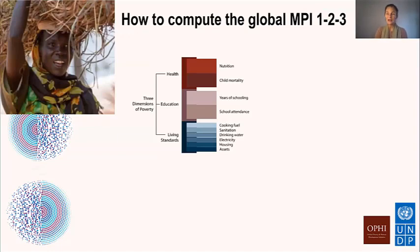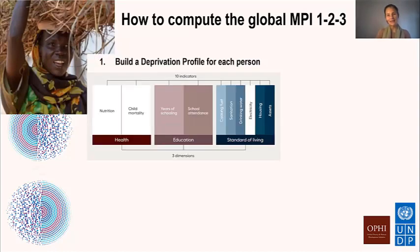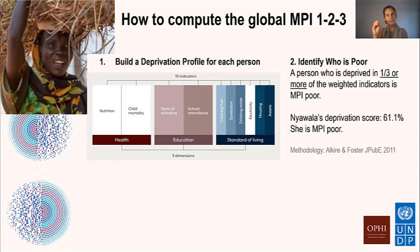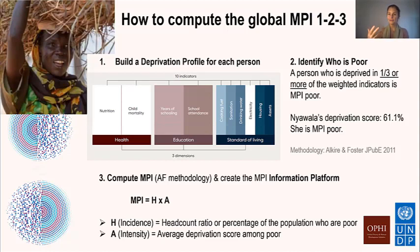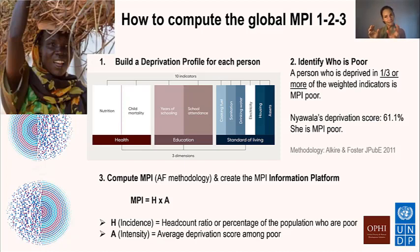Our case study this year is a woman aged 52 who left South Sudan to refugee camps in North Uganda with her daughter aged nine years old. They are not deprived in health indicators, but she has not been to school and her grandchild is out of school. They're deprived in all of the living standard indicators except electricity. Adding up these weighted indicators gives a deprivation score of 61%, which exceeds the 33% threshold, so she is identified as poor. We look at the percentage of people who are poor, and also the average deprivation score among the poor, which we call intensity. Multiplying incidence times intensity gives you the MPI.